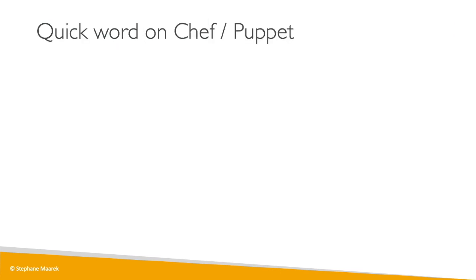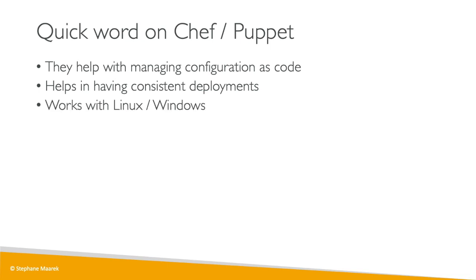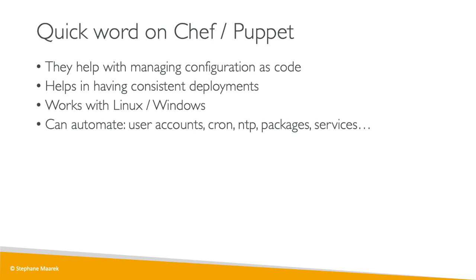I still want to give you an overview of what Chef and Puppet are. They basically help with managing configuration as code — all the stuff you run onto your VMs and machines is coded. That helps in having consistent deployments because the same code can be applied on many different machines. It works with Linux and Windows, and you can automate a lot of things such as user accounts, cron jobs, NTP, packages, services, etc.